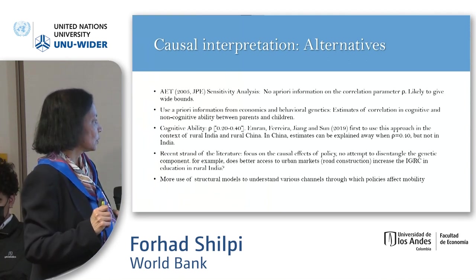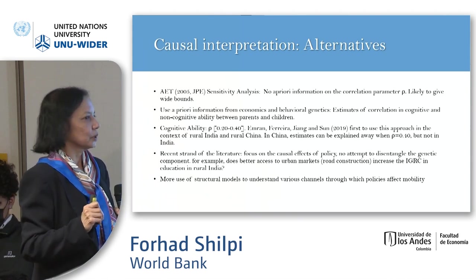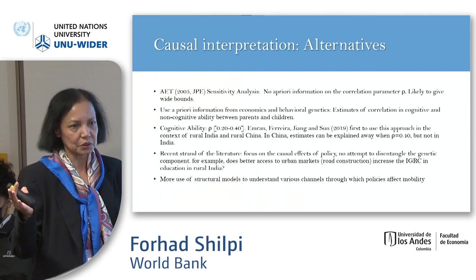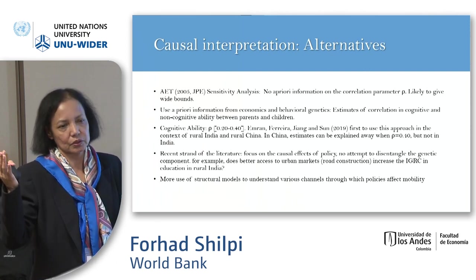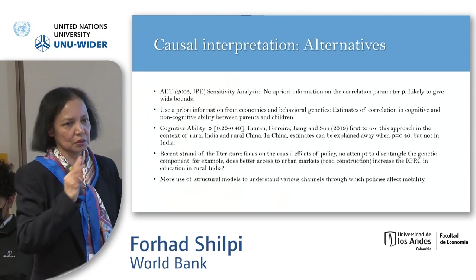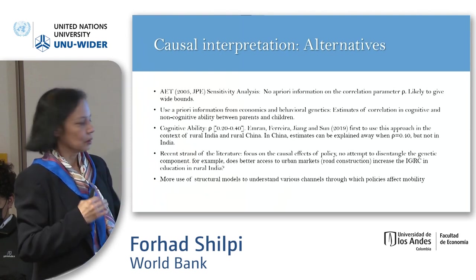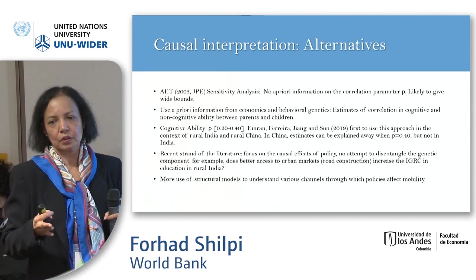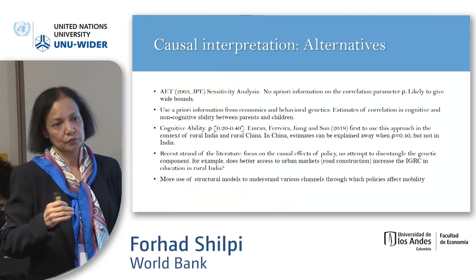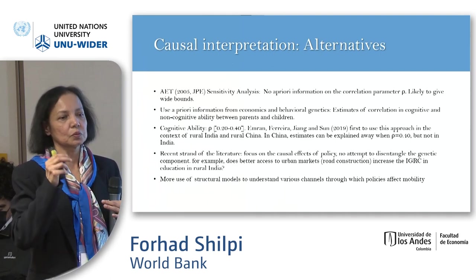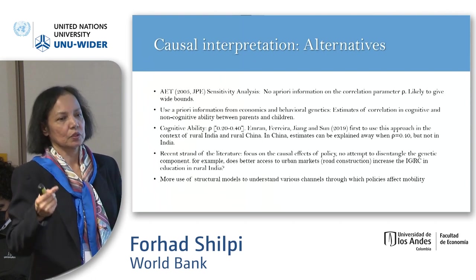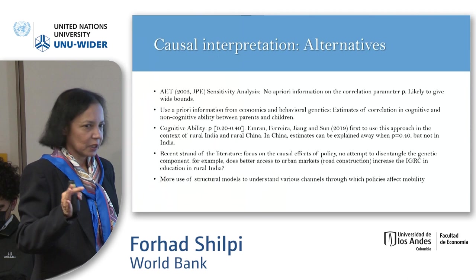I should also tell you that when you're doing policy impact analysis, you may not need to worry as much about ability correlations, because the distribution of ability is not going to change because of a policy — because of the construction of a road or a school. Finally, there is also an emerging literature which focuses on using structural models to provide more structure on different mechanisms. Those models also have a lot of degrees of freedom to figure out what the ability parameters are going to be and, on the basis of that, to do policy simulation. And that is my last point. Thank you.